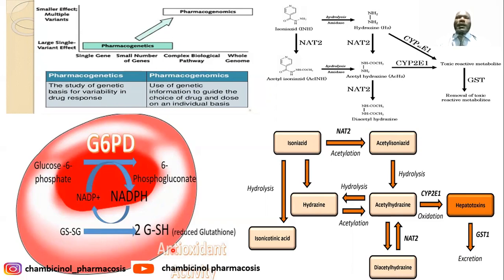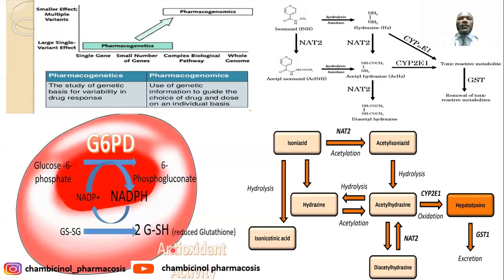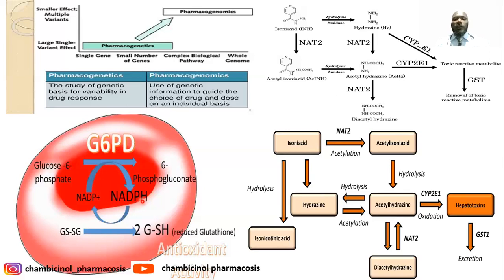Some drugs have a tendency to cause hemolysis — breaking of red blood cells. In the presence of reduced glutathione, hemolysis will not occur. However, in individuals with G6PD deficiency, the red blood cells will be fragile and can be easily ruptured upon absorption of drugs such as primaquine, sulfonamides, and other antimalarial drugs.